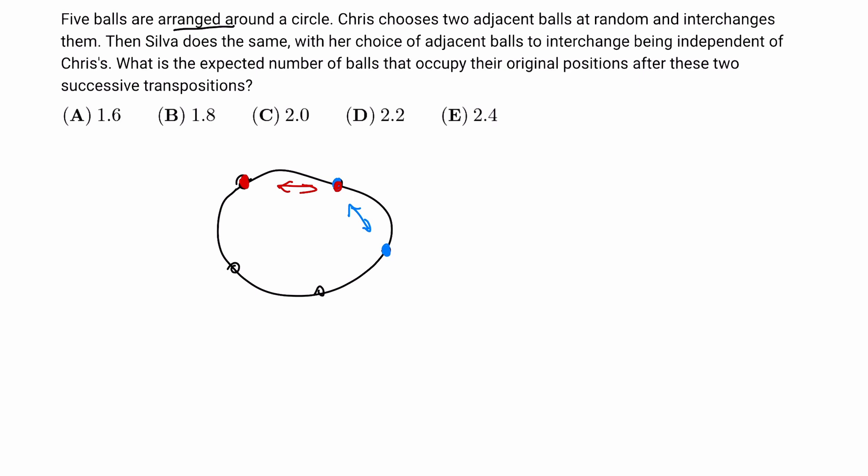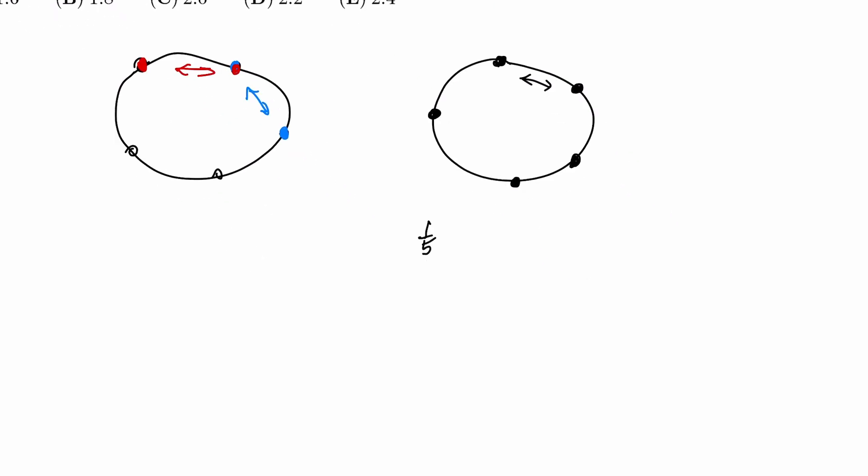Well, the first choice doesn't really matter to us, because however we do it, we can rotate it for it to look exactly the same. So let's say the first one looks like this. Now, there is a one-fifth chance that he would choose the same pair, and basically flip them back, so our expected value is five.